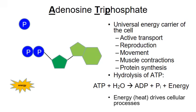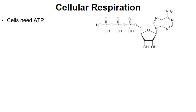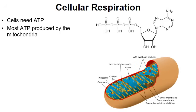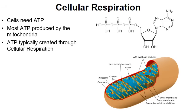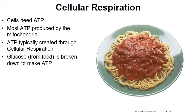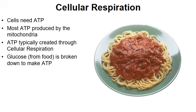So how is ATP created? ATP gets created through cellular respiration. Cells need ATP to power their chemical reactions, and most ATP is produced by the powerhouse of the cell — the mitochondria. A molecule of glucose from our food is broken down to make a whole bunch of molecules of ATP.